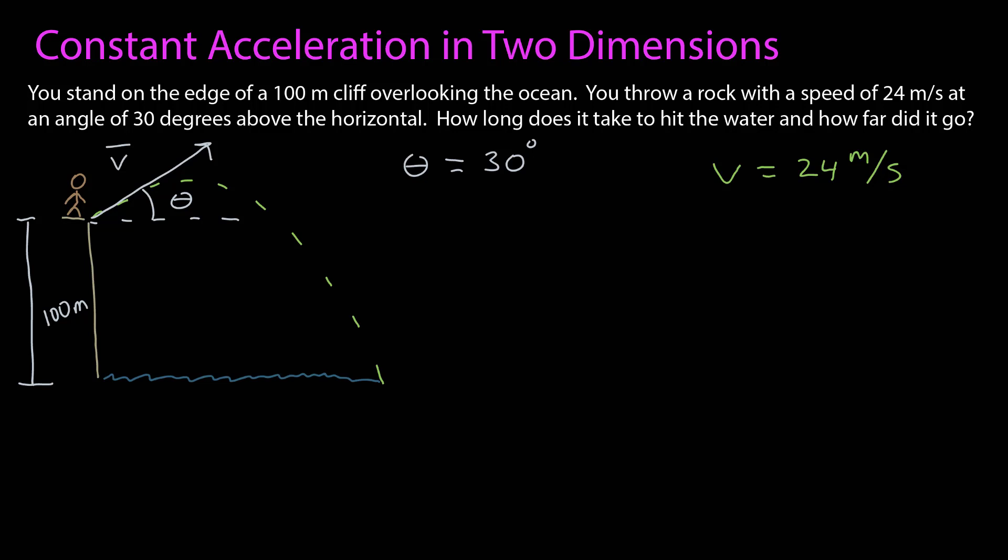The first thing I have to do, if I'm going to use those relationships, is I have to choose two points in time. And so I think it's pretty clear the two points in time I'm interested in are the time that it left, the initial time, which I'll call zero, and then the final time when it hits the ocean. I'll call that just t, so my time interval delta t is also just t.